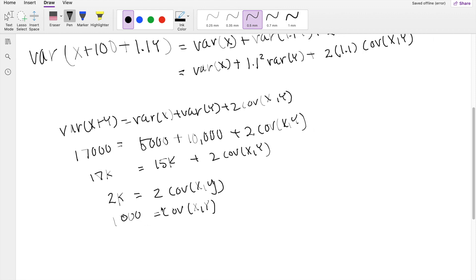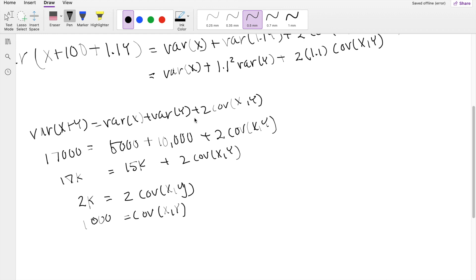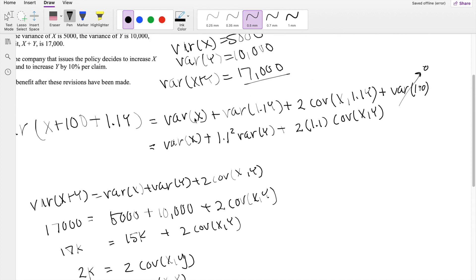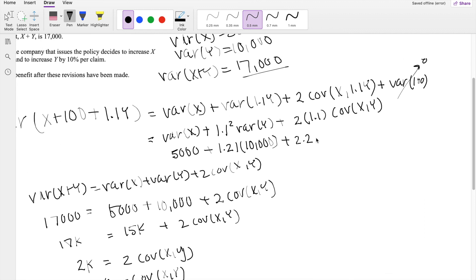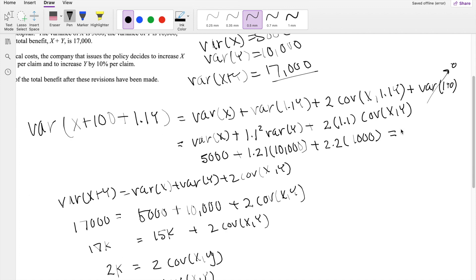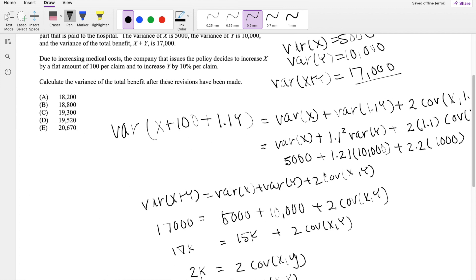Alright, so now we have everything we need. Plugging everything in here, the variance of x, again, is 5,000. 1.1 squared is 1.21 times the variance of y, which is 10,000, plus 2 times 1.1, it's 2.2 times covariance, which is 1,000, which we found earlier. So then this is equal to 19,300, which is our answer C.